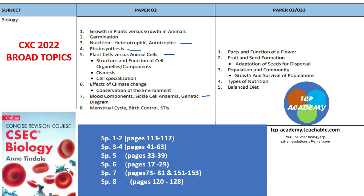To find the content on specific objectives 1 and 2 — that's growth and germination — you'll find it in that book on pages 113 to 117. To find the content on specific objectives 3 and 4 — that is nutrition and photosynthesis — you'll find it on pages 141 to 163.